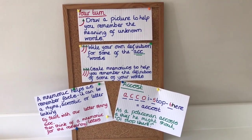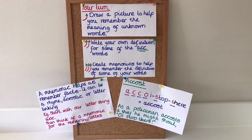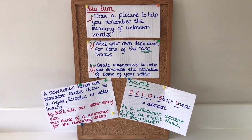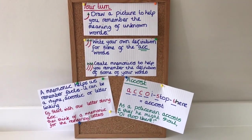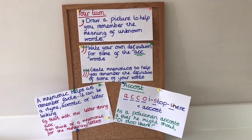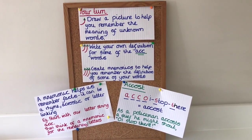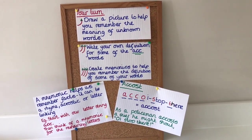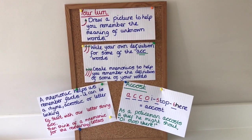The chilli three challenge is quite challenging today, so I'm just going to briefly explain what a mnemonic is. A mnemonic helps us to remember facts — it can be written as a rhyme, an acrostic, or letter linking. To create a mnemonic for our 'acc-' words, you start with the letter string 'acc-', then think of a mnemonic for the remaining letters. For example, the word 'accost': if a policeman were to accost a criminal, the policeman might shout 'Oy, stop there!' — so A, C, C, O, S, T are the letters from 'accost', and the extra words help us remember the meaning.